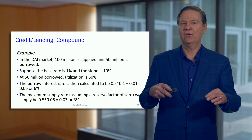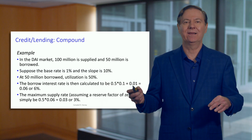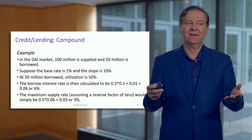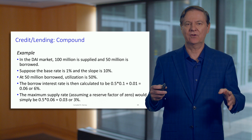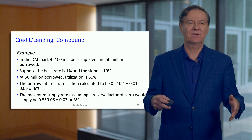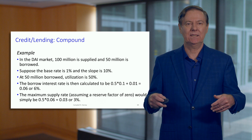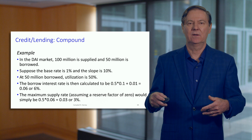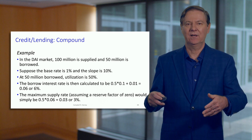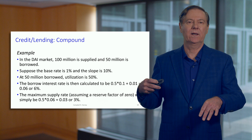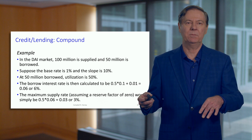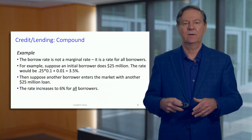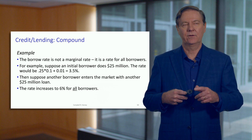Notice that suppliers are getting less than borrowers are paying — similar to a banking situation where the rate you get on savings is far less than what borrowers pay. The borrow rate is not a marginal rate; it's the rate for all borrowers, and it can change over time.